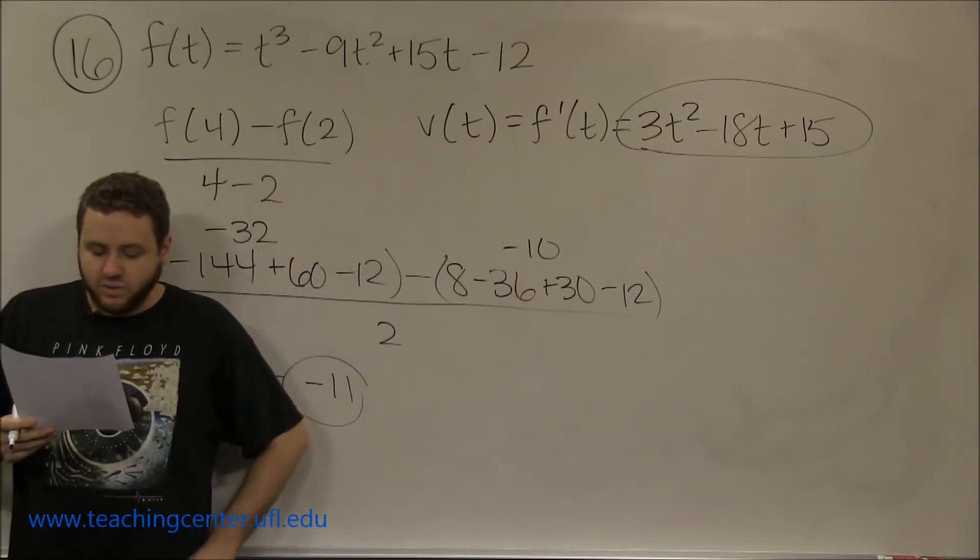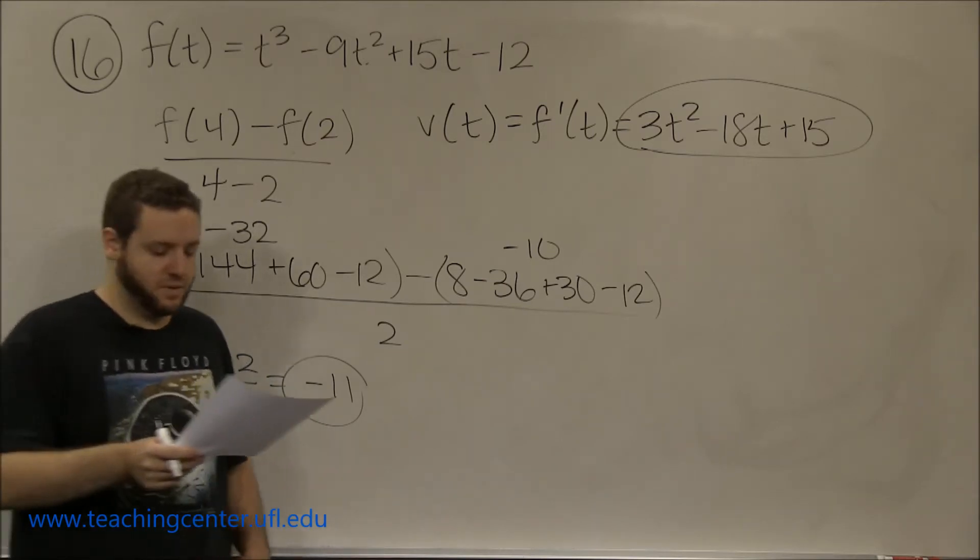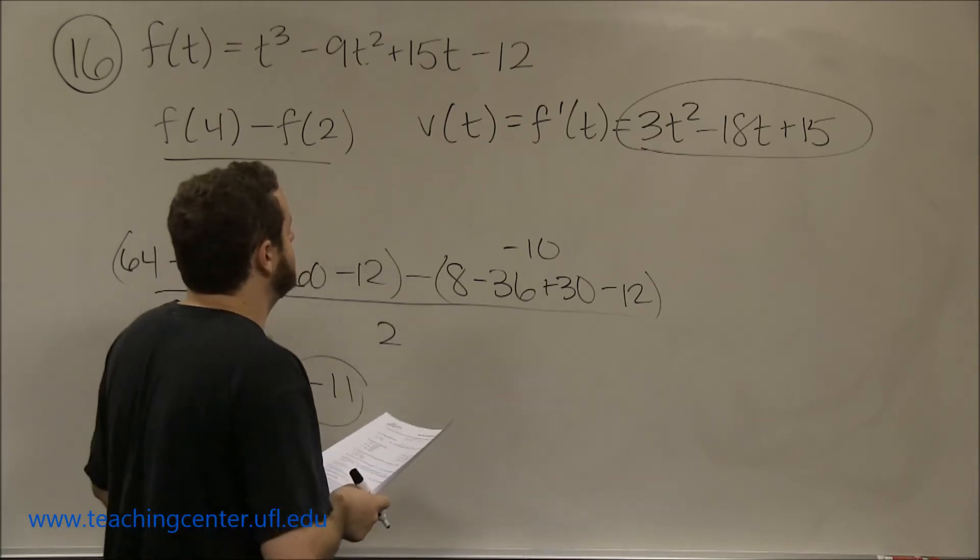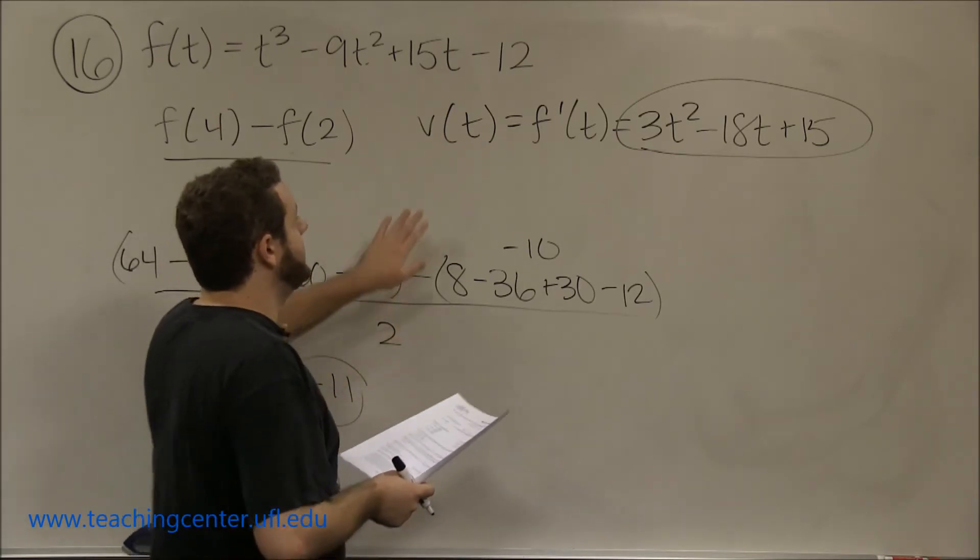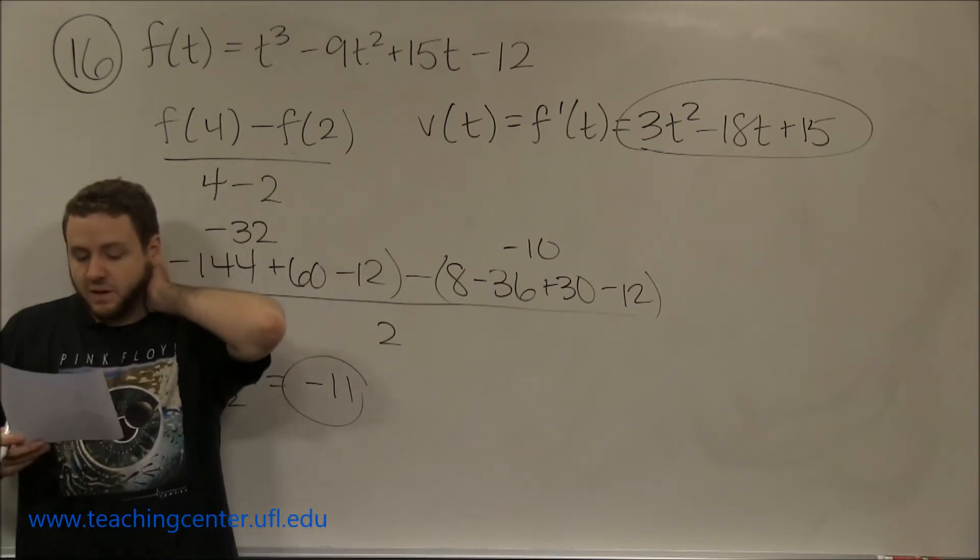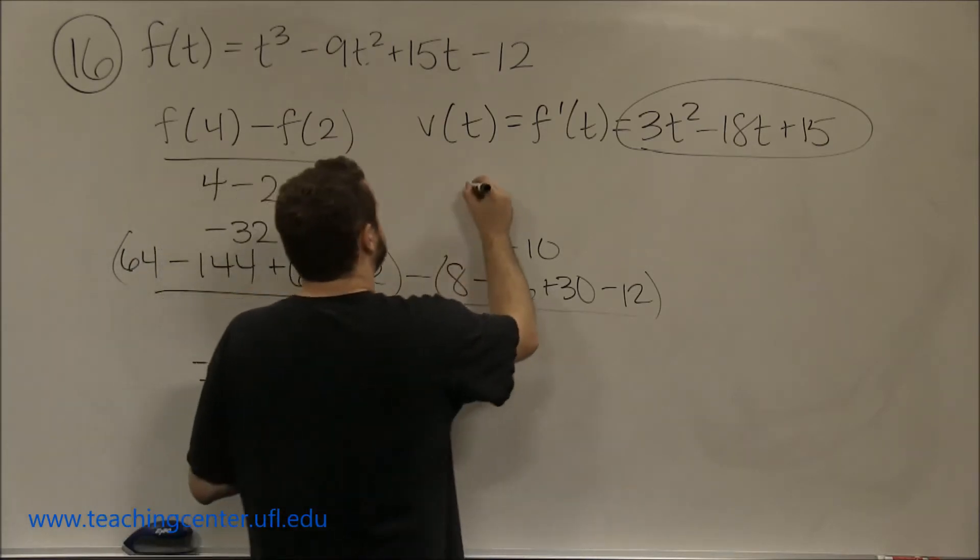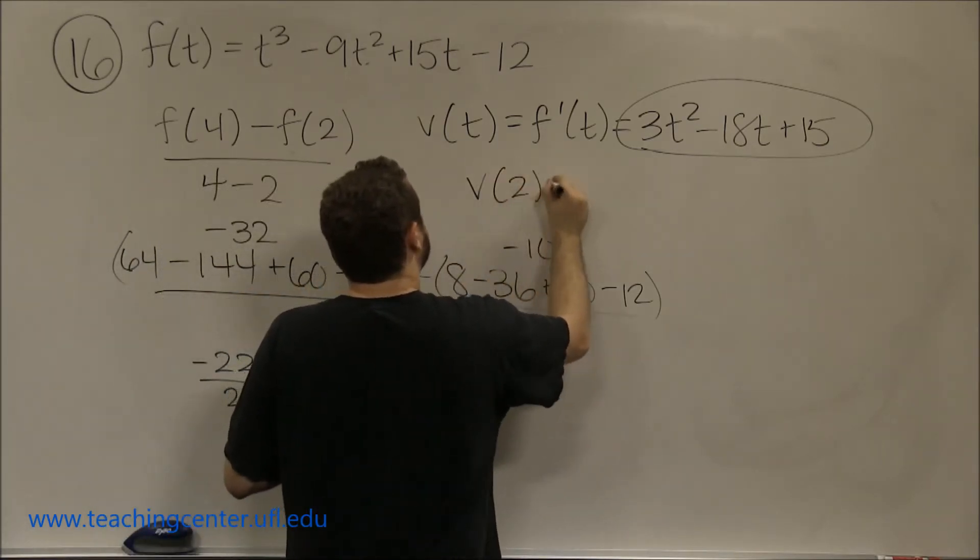Part c says, what is the particle's instantaneous rate of change at 2 seconds? The instantaneous rate of change is just the velocity, the derivative of position. So all we need to do to answer part c is to plug 2 in here. What is v(2)?